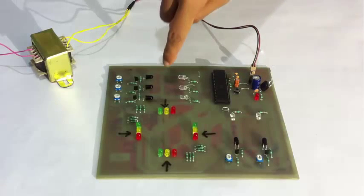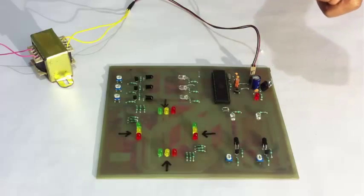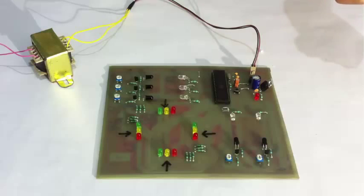We would be monitoring the traffic at this one and this way here. These IR transmitters and receivers are used to detect vehicles lined up on that particular road.